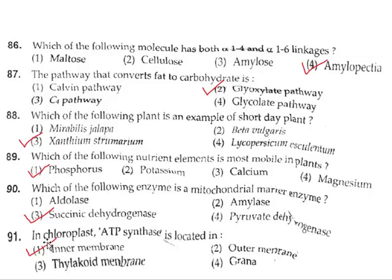Question 91: In chloroplast, ATP synthase is located where? ATP synthase is found in the inner membrane. So the correct answer is option 1.